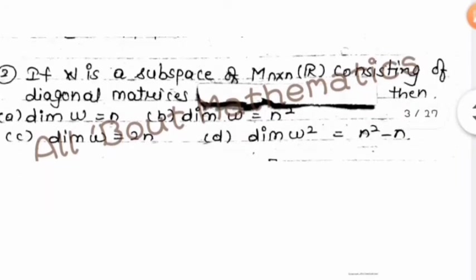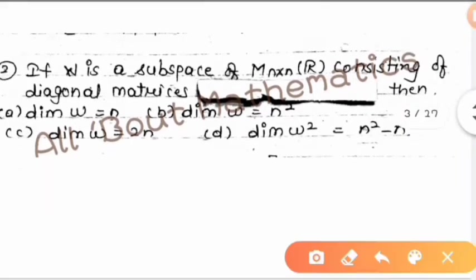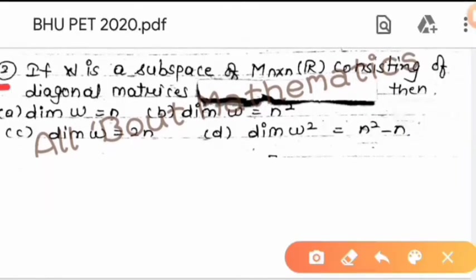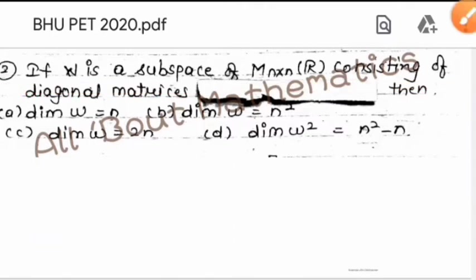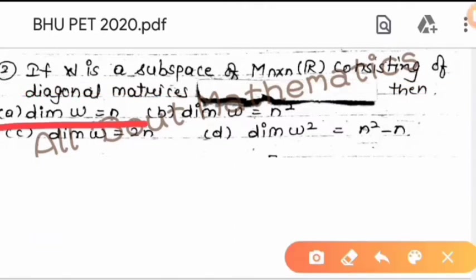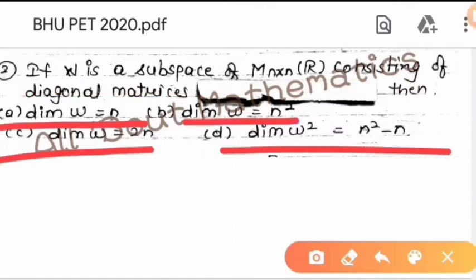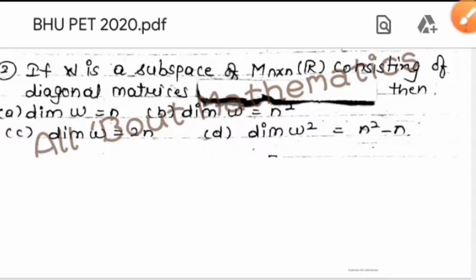In this question, given that W is a subspace of M_{n×n} over ℝ consisting of diagonal matrices. We need to find the dimension of W.